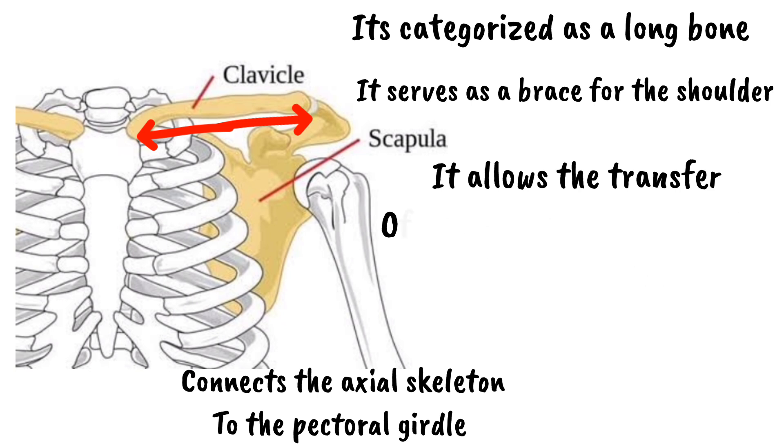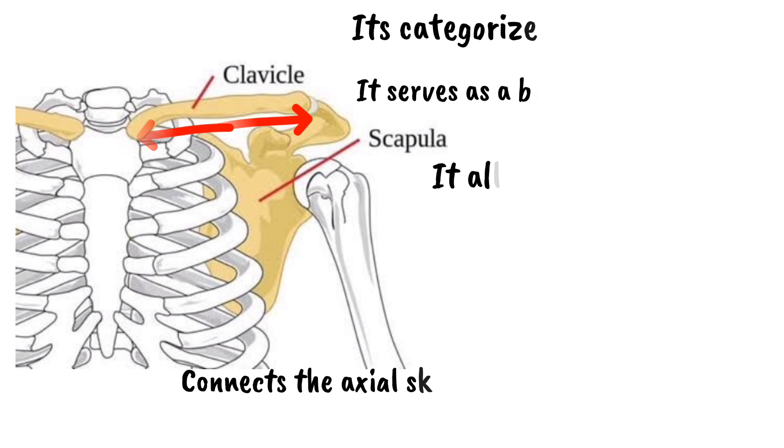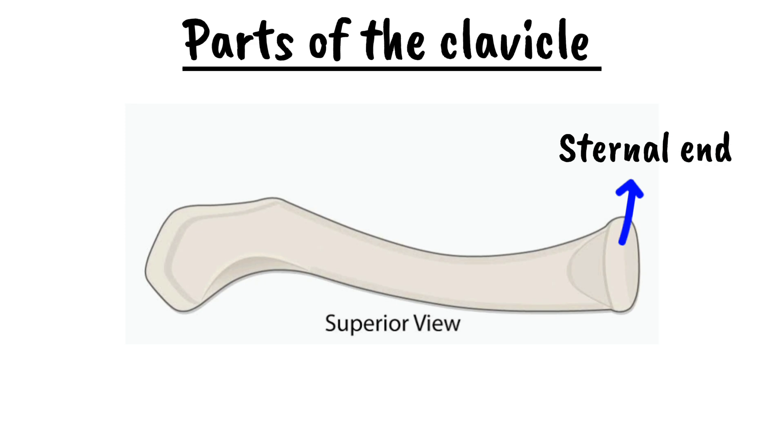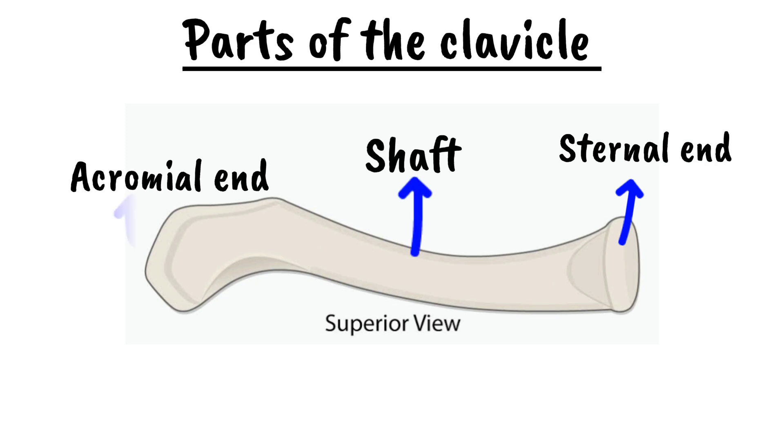The clavicle can be divided into three parts: the sternal end, the shaft, and the acromial end.